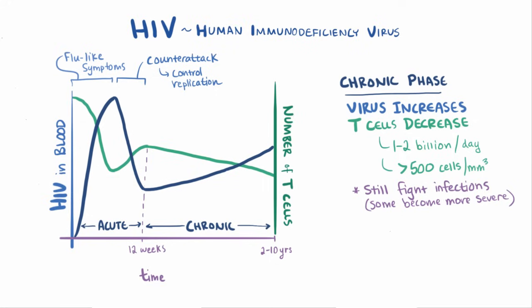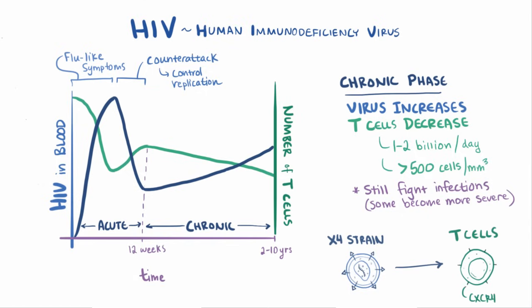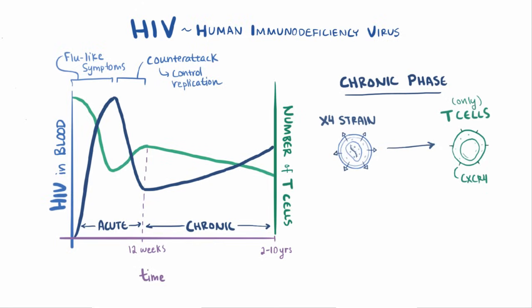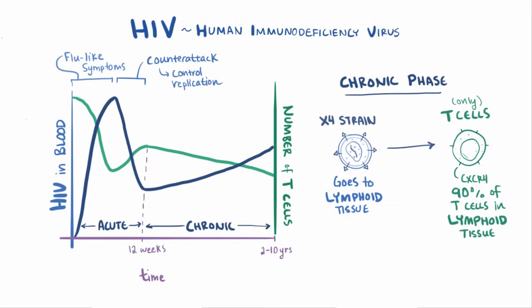Because HIV can create mutations, during the chronic phase some patients develop an X4 strain of HIV, which targets the CXCR4 coreceptor, found essentially only on T cells. These X4 strains lay low in the lymphoid tissues and steadily destroy CD4 T cells, since about 90% of T cells are found in the lymphoid tissue. Not all patients develop the X4 strain, so it's not completely clear what the presence of this strain implies about the disease course.